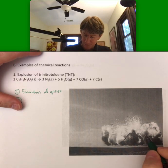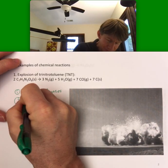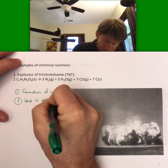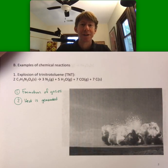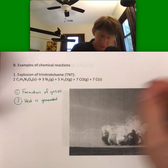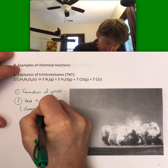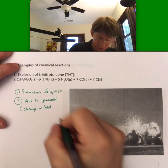It gets very hot — heat is generated. Heat is a form of energy. Heat can be generated, and heat can also be consumed. Either of those — just a change in heat energy — is another piece of evidence of a chemical reaction.